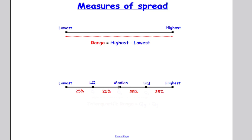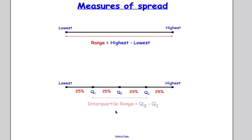each with 25% of the data. We had the lower quartile, the median, and the upper quartile. At A-Level, the lower quartile is often referred to as Q1, the median as Q2, and the upper quartile as Q3. The interquartile range is Q3 take away Q1, which tells us how spread out the middle 50% of data is, removing any problems caused by extreme values.